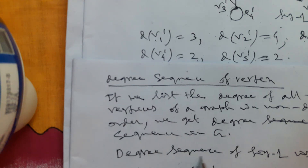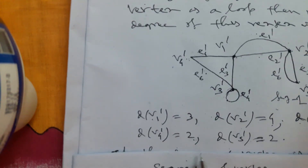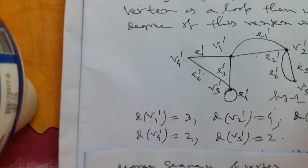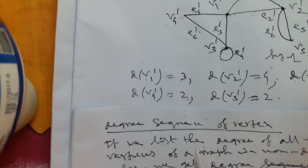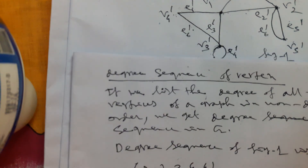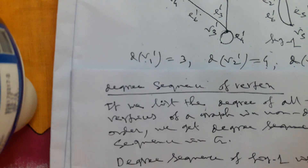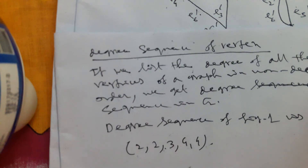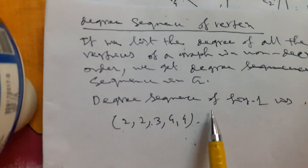The degree sequence of figure 1: arranging in non-decreasing order, we start from 2, then 3, then 4. The degrees are: V_4 = 2, V_5 = 2, V_1 = 3, V_2 = 4, V_3 = 4. So the required degree sequence is 2, 2, 3, 4, 4.